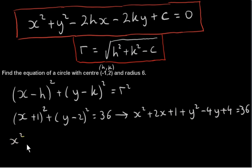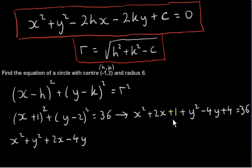So we get x squared plus y squared, plus 2x minus 4y. We have 1 plus 4 is 5, and 5 minus 36 is minus 31, equals 0. So now we have it in the general form: x squared term, y squared term, x term, y term, constant, equals 0.